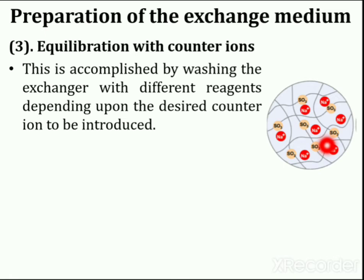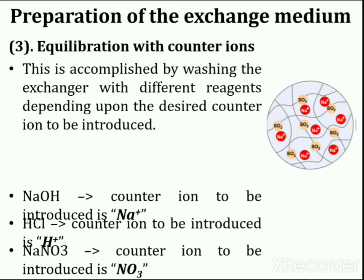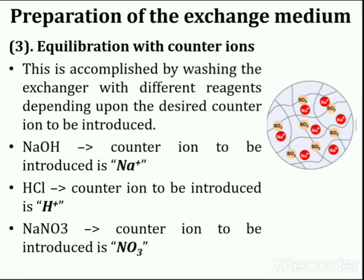In this picture the mobile ions are sodium cations. Equilibrium with counter ions is accomplished by washing the exchanger with different reagents depending upon the desired counter ion to be introduced. For example, for NaOH, the counter ion to be introduced is Na⁺. For HCl, the counter ion to be introduced is H⁺. For NaNO₃, the counter ion to be introduced is NO₃⁻.